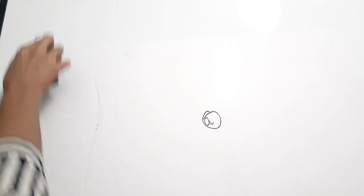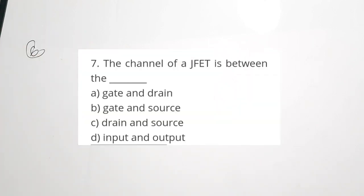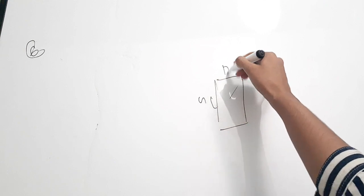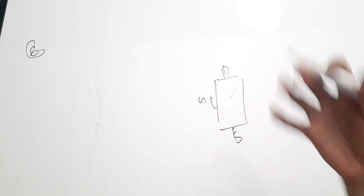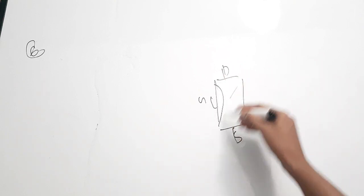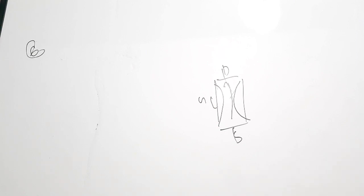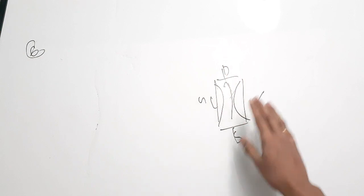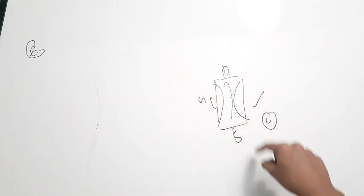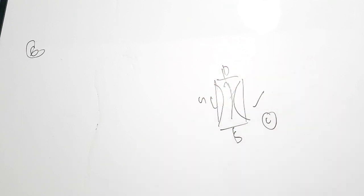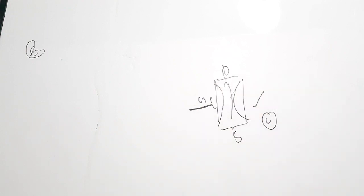Sixth question is from JFET. The channel of JFET is between dash. This is a basic question — if you know the structure of JFET, you can answer it. There are three terminals: gate, drain, and source. The channel is the conducting channel between drain and source. Options: A, gate and drain — no; B, gate and source — no; C, drain and source — yes, that's the correct answer, option C. The channel gets pinched off due to the gate voltage and VDS.